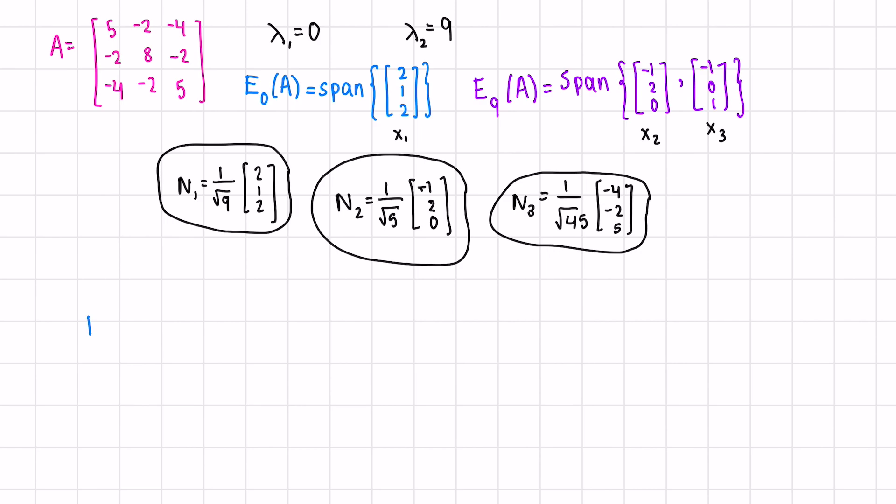This means that we can form our matrix P, and our diagonal matrix will have the eigenvalues in the same order, so 0, 9, 9.